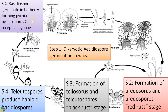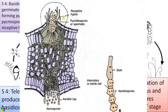Once basidiospores reach the barberry leaf, they germinate forming extensive structures called pycnia, pycniospores, and receptive hyphae. The plus and minus strains germinate on the upper surface of the barberry leaf, forming an elaborate structure — here begins the haplophase in the life cycle. This flask-shaped structure is called pycnia. Pycnia has two specialized hyphae: spermatia-bearing hyphae and receptive hyphae.